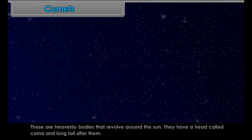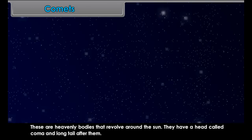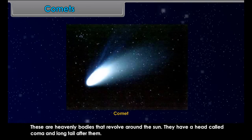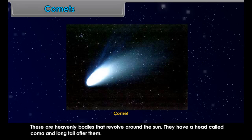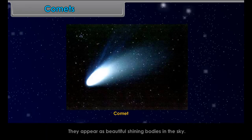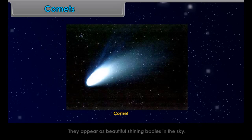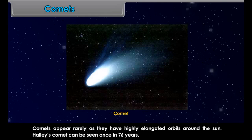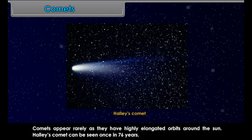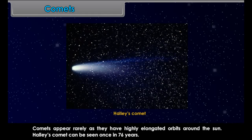Comets are heavenly bodies that revolve around the sun. They have a head called a coma and a long tail after them. They appear as beautiful shining bodies in the sky. Comets appear rarely as they have highly elongated orbits around the sun. Halley's Comet can be seen once in 76 years.